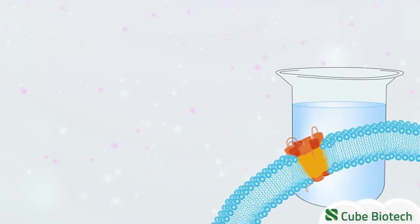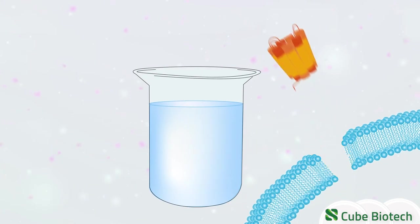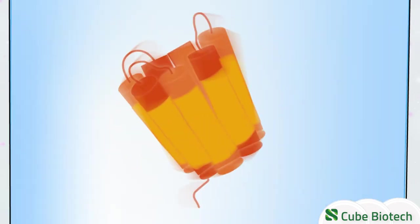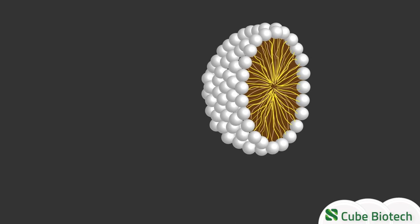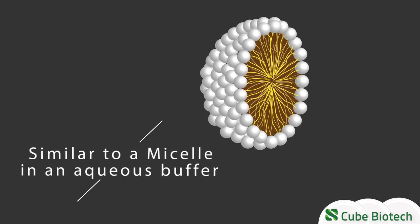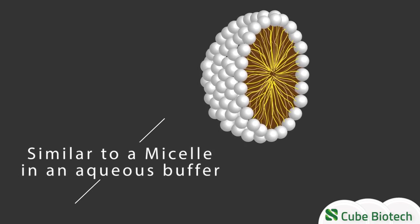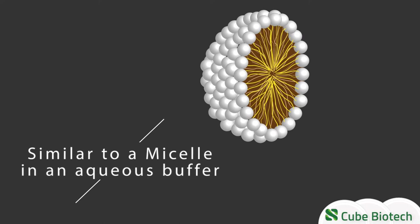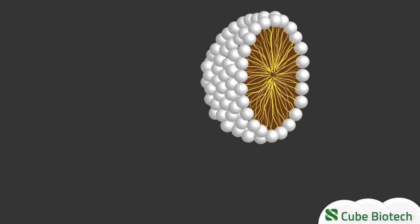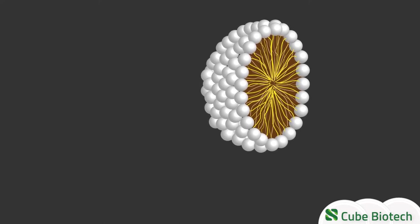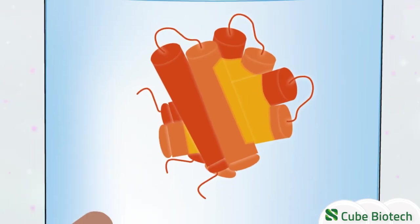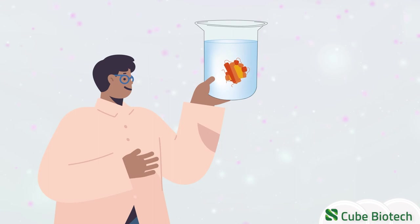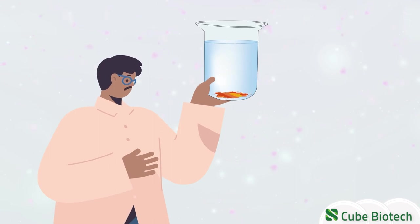Solubilizing a membrane protein in a standard aqueous buffer prompts the hydrophobic parts of the membrane protein to clump together. One could imagine this to function similarly to a micelle, where the hydrophobic tails of the phospholipid turn inwards to touch the water as little as possible, and the hydrophilic heads point outward. This alters the native structure and folding of the membrane protein. In most cases, the consequence is that the membrane protein cannot be studied in its native form anymore.